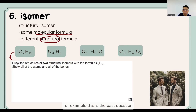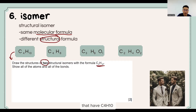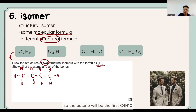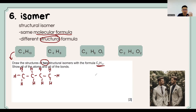For example, this is a past year question: draw the structures of two structural isomers that have the molecular formula C4H10. We start drawing from C4 first — so we have 1, 2, 3, 4 carbons. The first structure is butane, which is C4H10.